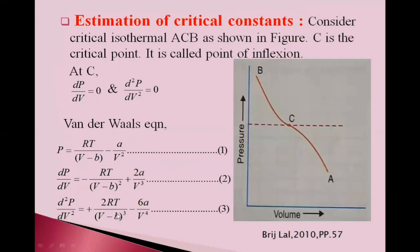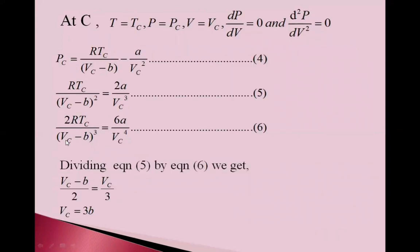See again, this equation. Here, keep 0. And again, 2RTc upon Vc minus b cube is equal to, this becomes positive on this side. So, 2RTc upon Vc minus b cube is equal to 6a upon Vc raised to 4. Equation 6.